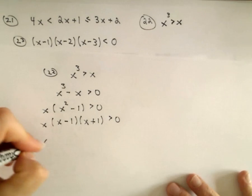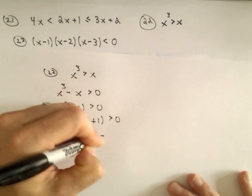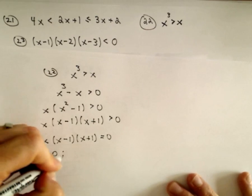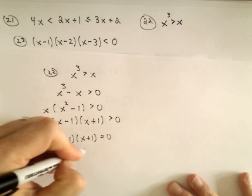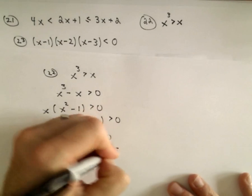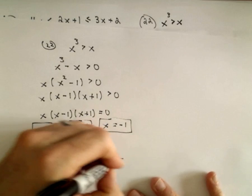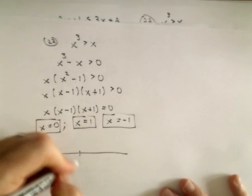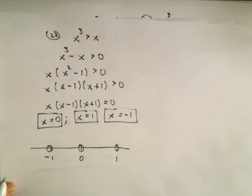Now if you think about the corresponding equation: if we set x equal to 0, we get the solution x equals 0. If we set x minus 1 equal to 0, we get x equals 1. And if we set x plus 1 equal to 0, we get x equals negative 1. So just like in the other examples, I'm going to make a number line and test a point from each interval.